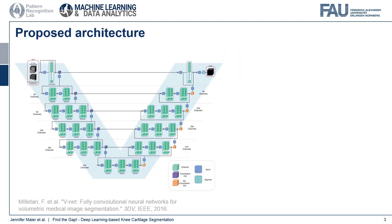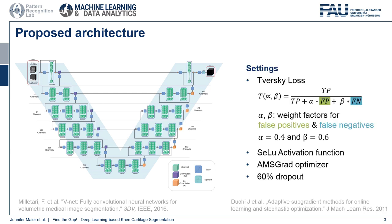To segment the cartilage surface, we propose to use a neural network for volumetric segmentation. We are using the Tversky loss, which is a variant of the Dice loss where the influence of false positives and false negatives is weighted by the factors alpha and beta. We further choose to use the SELU activation function, the AMSGrad optimizer, and 60% dropout.